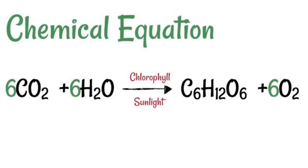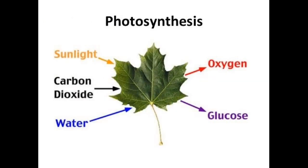The chemical equation of photosynthesis is: 6CO₂ + 6H₂O → (chlorophyll, sunlight) → C₆H₁₂O₆ + 6O₂. In the photosynthesis process, sunlight, carbon dioxide, and water are the reactants, and oxygen and glucose are the end products.